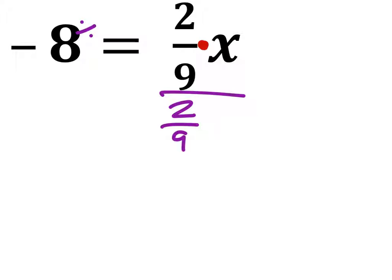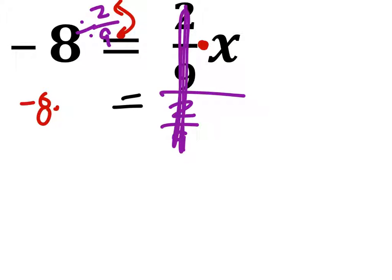And I'll write the negative 8 divided by 2 ninths like this. This gives us a one variable, so we just have the x, and this equals, what I'm going to do is take the reciprocal of 2 ninths so that I can have a negative 8 times, now, a 9 halves.